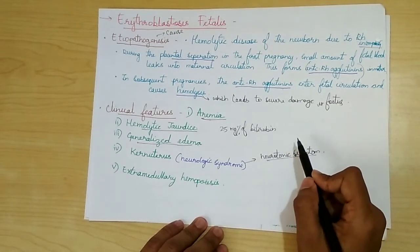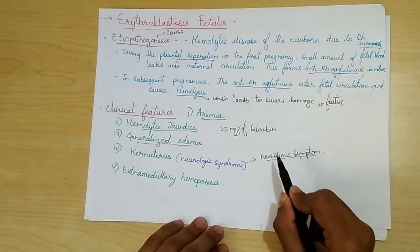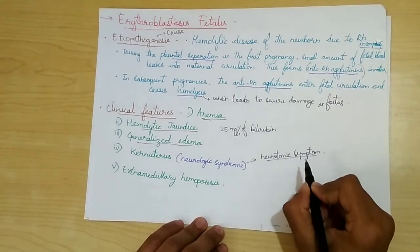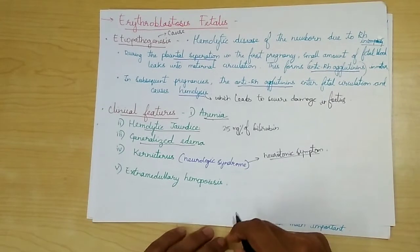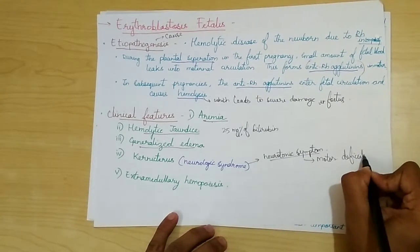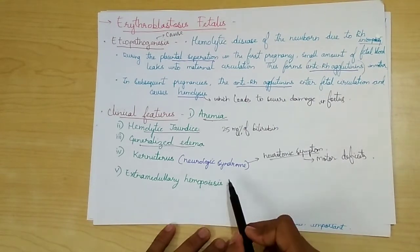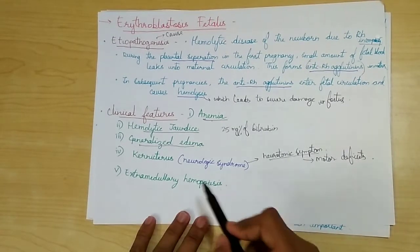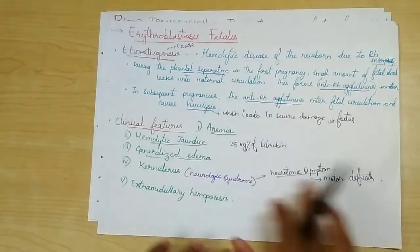Kernicterus is a major neurologic syndrome — it is neurotoxic because bilirubin escapes into the brain by crossing the blood-brain barrier and deposits on the basal ganglia. In adults this is not seen because the blood-brain barrier is strong, but in fetuses the blood-brain barrier is weak, so bilirubin enters the brain and causes major motor deficits. Extramedullary hematopoiesis occurs as more erythroblasts are produced to compensate for blood loss, hence the condition is called erythroblastosis fetalis.